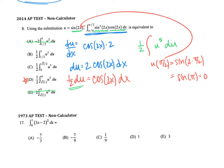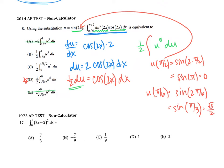My lower bound was pi over 6. Plugging that in, u of pi over 6 is the sine of 2 times pi over 6, leaving me with the sine at pi over 3. The sine at pi over 3 is root 3 over 2. So my lower bound of pi over 6 needs to be replaced with root 3 over 2. I'm going with d.